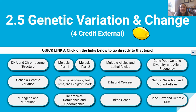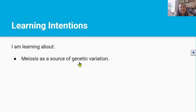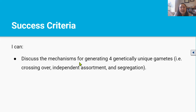Kia ora guys! Welcome back to the 2.5 genetic variation and change video series. This is video 5. In this video you'll be learning about meiosis as a source of genetic variation, and by the end of this lesson you should be able to discuss the mechanisms for generating four genetically unique gametes. These include crossing over, independent assortment, and segregation.